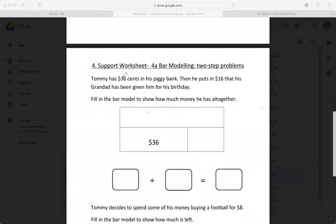Because it says $36 and then it just writes cents here. So I'm going to try and cross off cents. Don't worry about that. All right. Tommy has $36 in his piggy bank. Then he puts in 16 more dollars that his granddad had given him for his birthday. Fill in the bar model to show how much he has altogether.